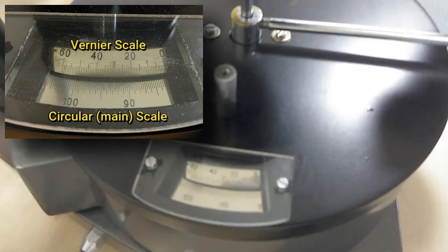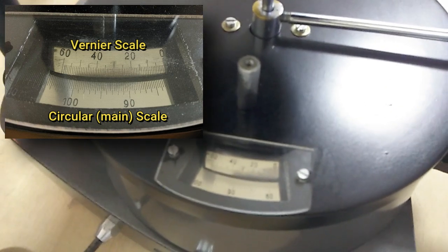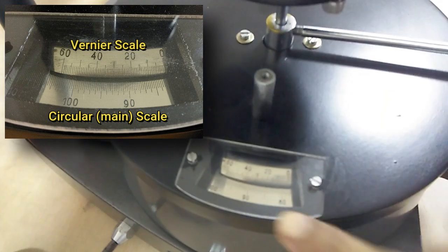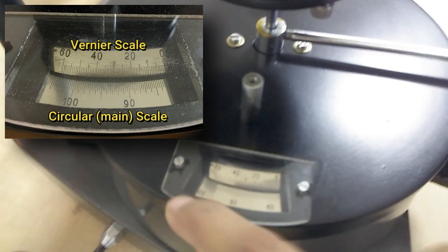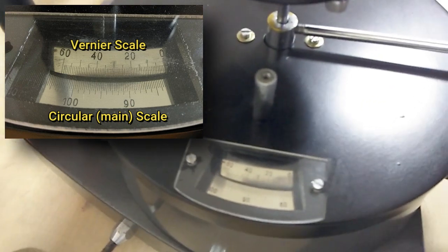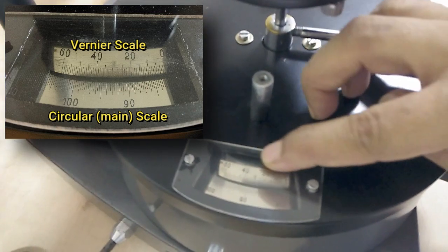So the rotation of the telescope is the rotation of the lower scale, circular scale, and because this vernier scale is fixed.